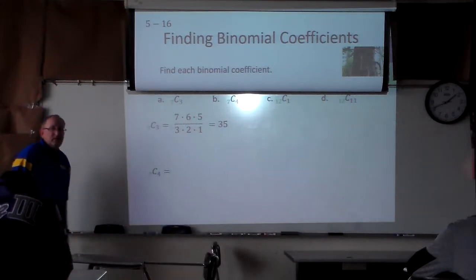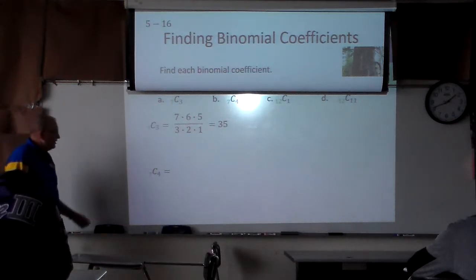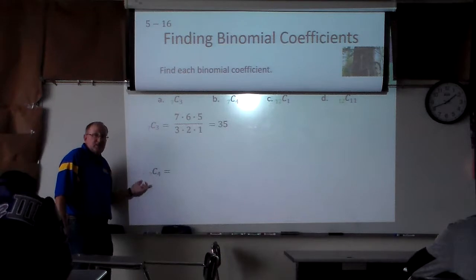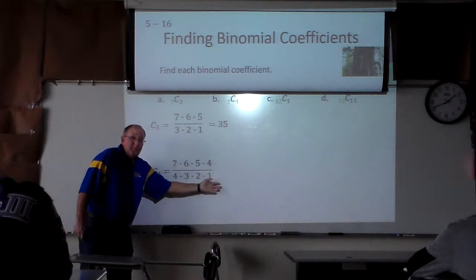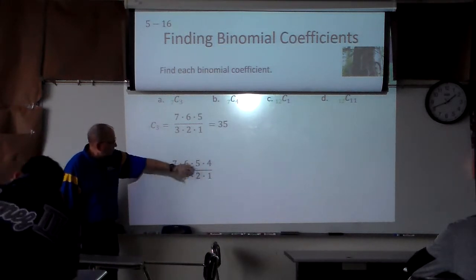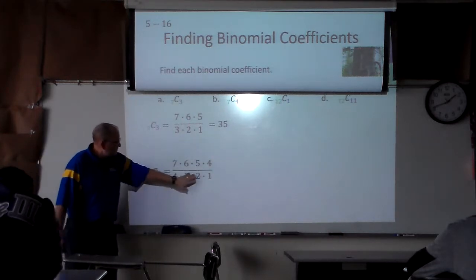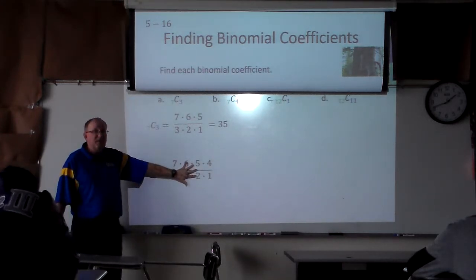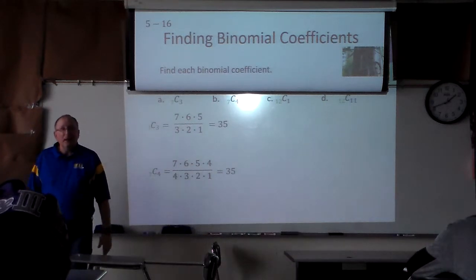Look at the next one: 7C4. That gives us 7 times 6 times 5 times 4 — 4 of them — over 1 times 2 times 3 times 4. The 4's are going to cancel. And 3 times 2 is 6 again. So, 7 times 5 is 35 again.